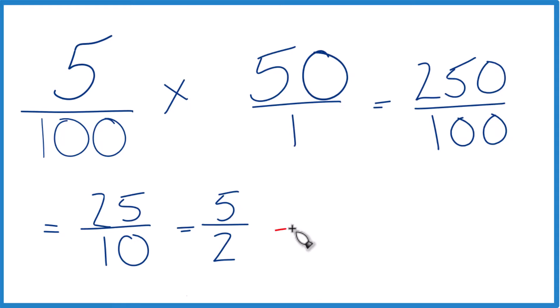You could write this as a mixed number. So 2 goes into 5 two times with 1 left over. We'll keep the 2 here, so 2 and a half.